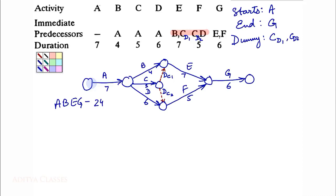Then there is a path A, C, dummy of C, E and G. When we come across a dummy, we actually do not mention it. So we will call it A, C, E, G.